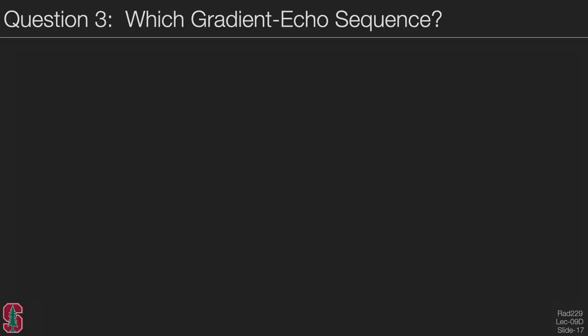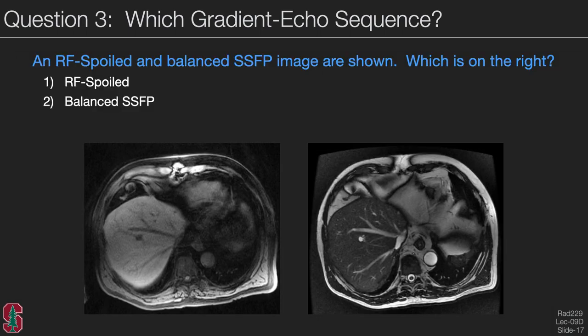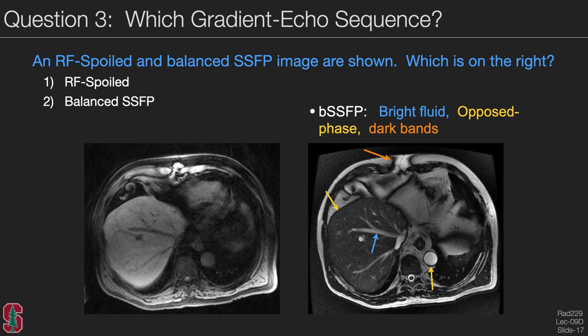Given two images, one RF spoiled and one balanced SSFP, the one on the right is balanced SSFP. There are several ways to tell: the fluid is very bright, these are bile ducts in the liver, there are opposed phase effects at the edge of the liver, and there are dark bands where signal dropout occurs. These are all characteristics of balanced SSFP that do not exist with RF spoiled imaging.